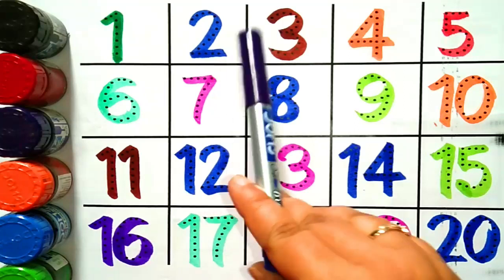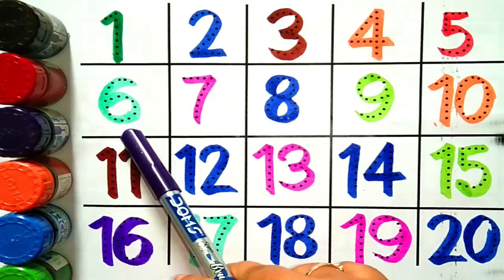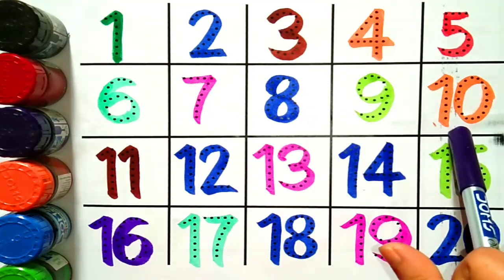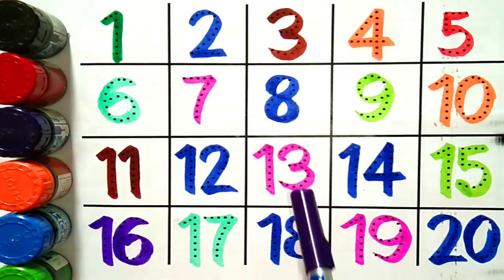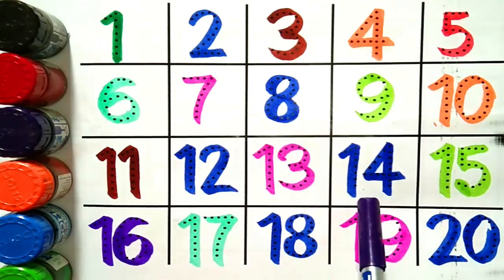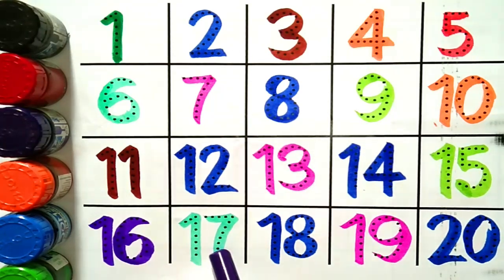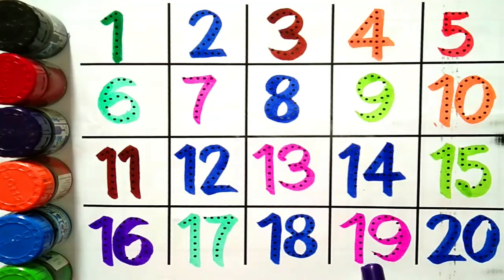One, two, three, four, five, six, seven, eight, nine, ten, eleven, twelve, thirteen, fourteen, fifteen, sixteen, seventeen, eighteen, nineteen, twenty.